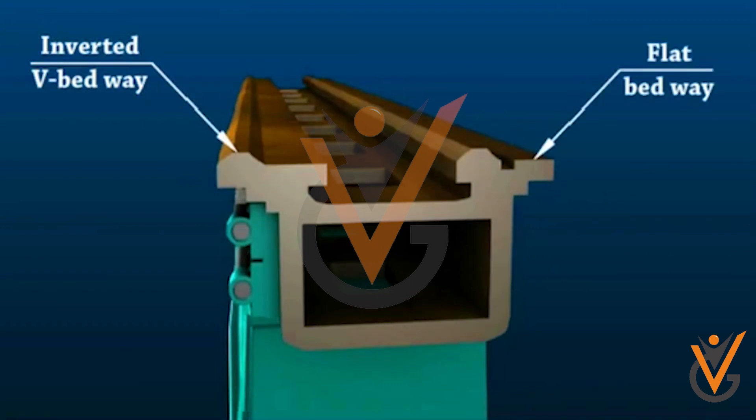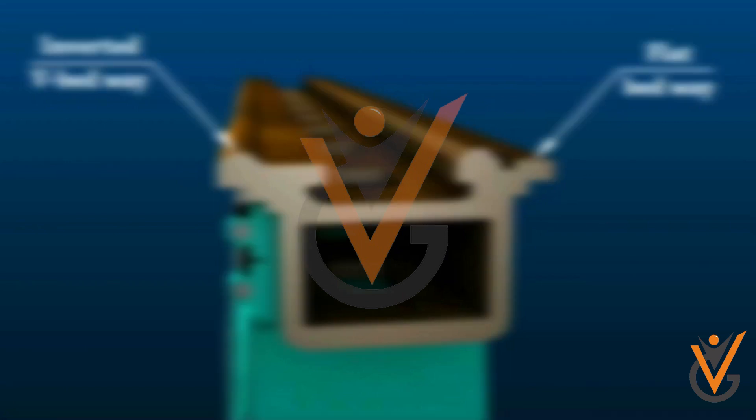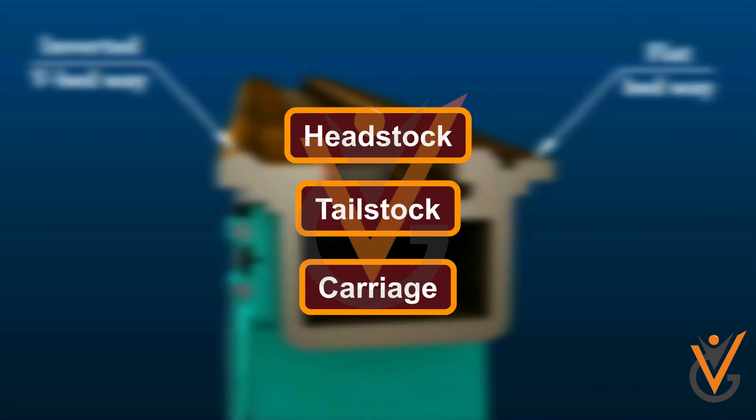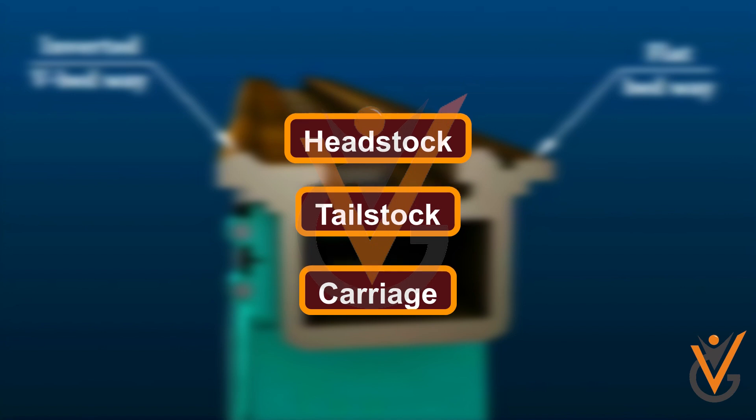The three major units mounted on the bed are headstock, tailstock, and carriage. The headstock is present on the left end of the bed.